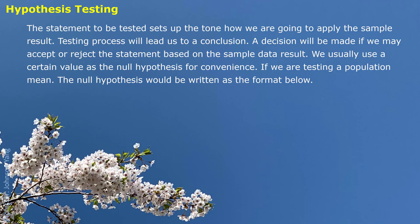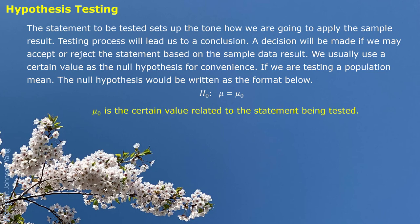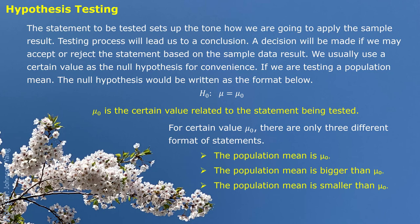We usually use a certain value as the null hypothesis for convenience. If we are testing a population mean, the null hypothesis is written as H0: mu equals mu0, where mu0 is the certain value related to the statement being tested. For mu0, there are only three different formats: the population mean is mu0, bigger than mu0, or smaller than mu0. No matter which condition, we can always set up our null hypothesis as mu equals mu0.